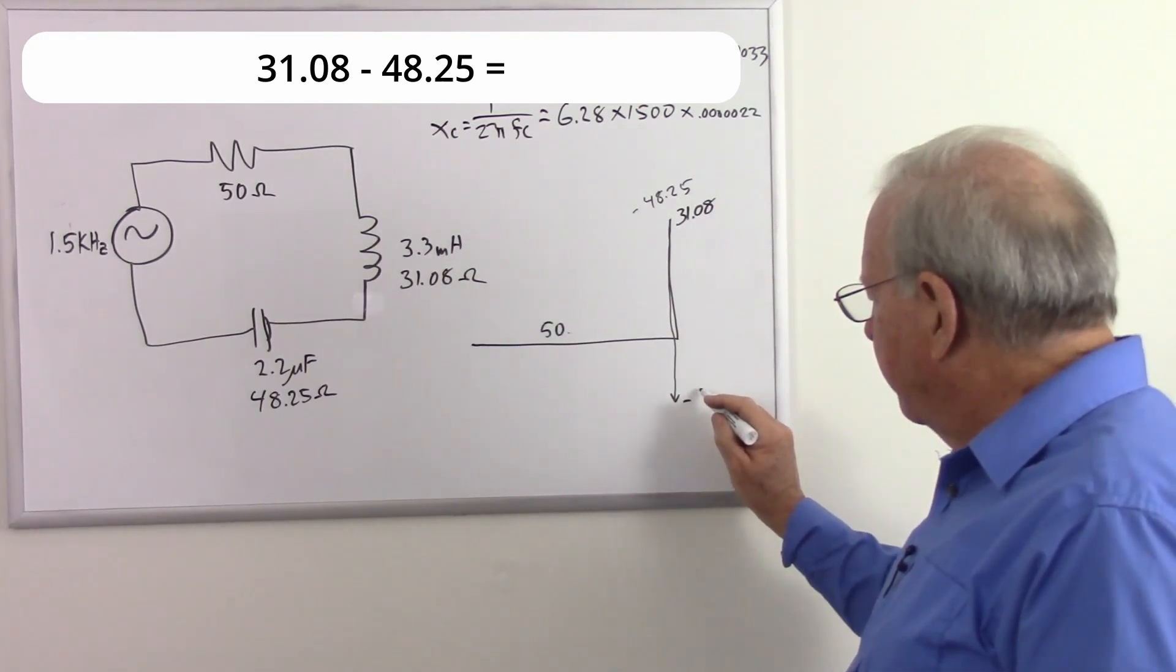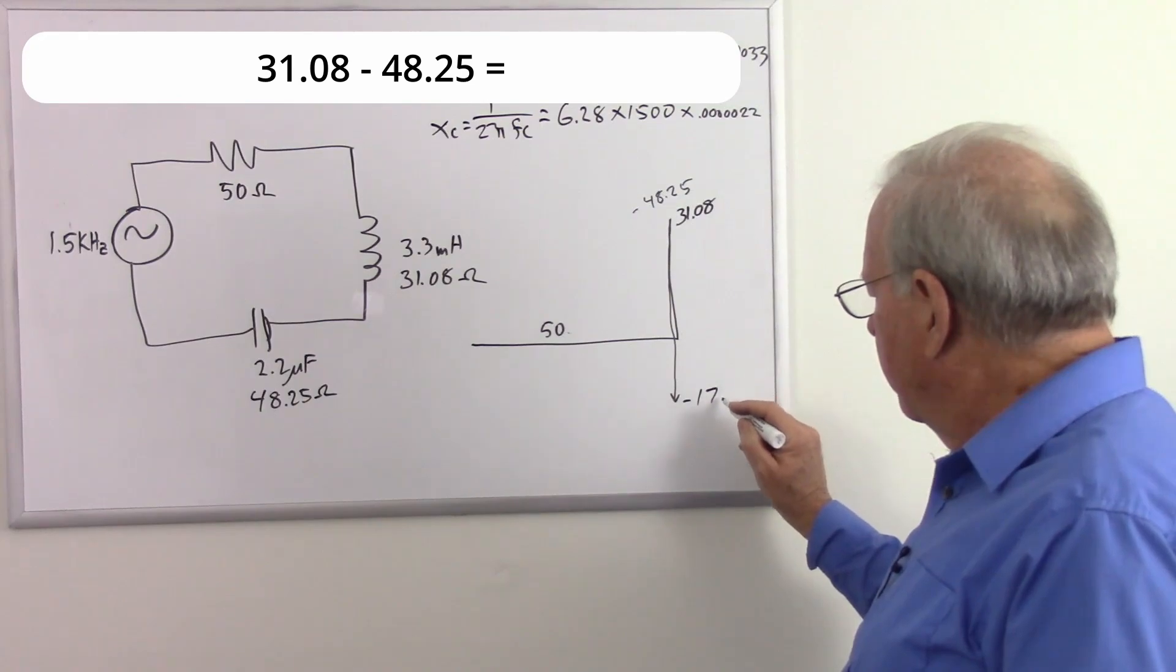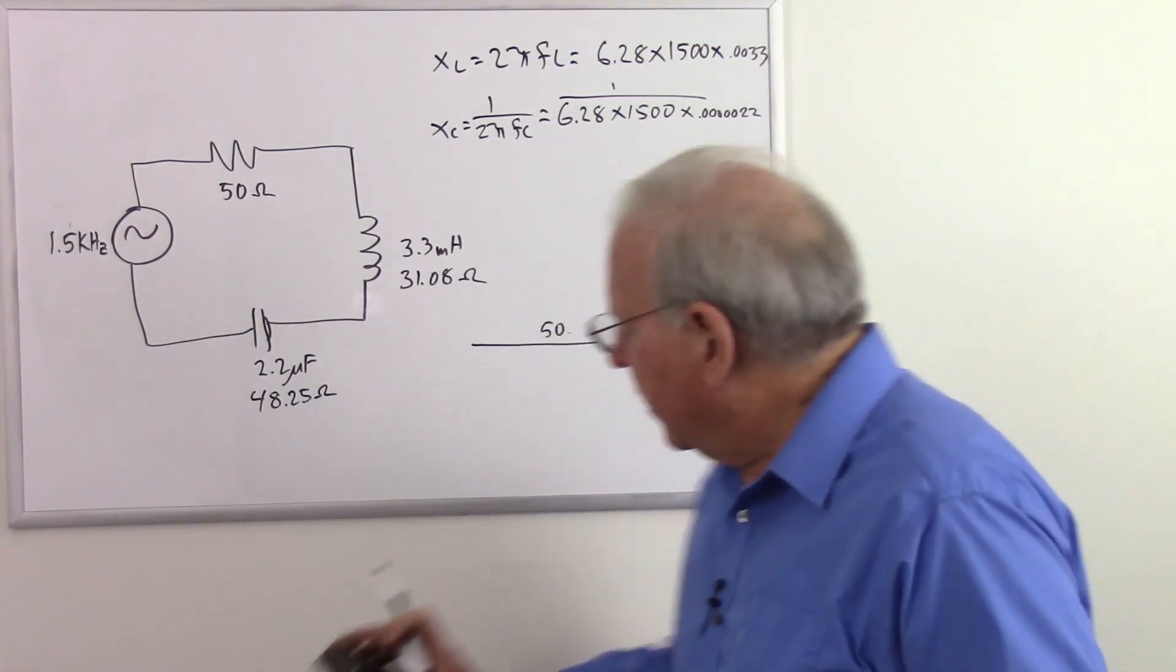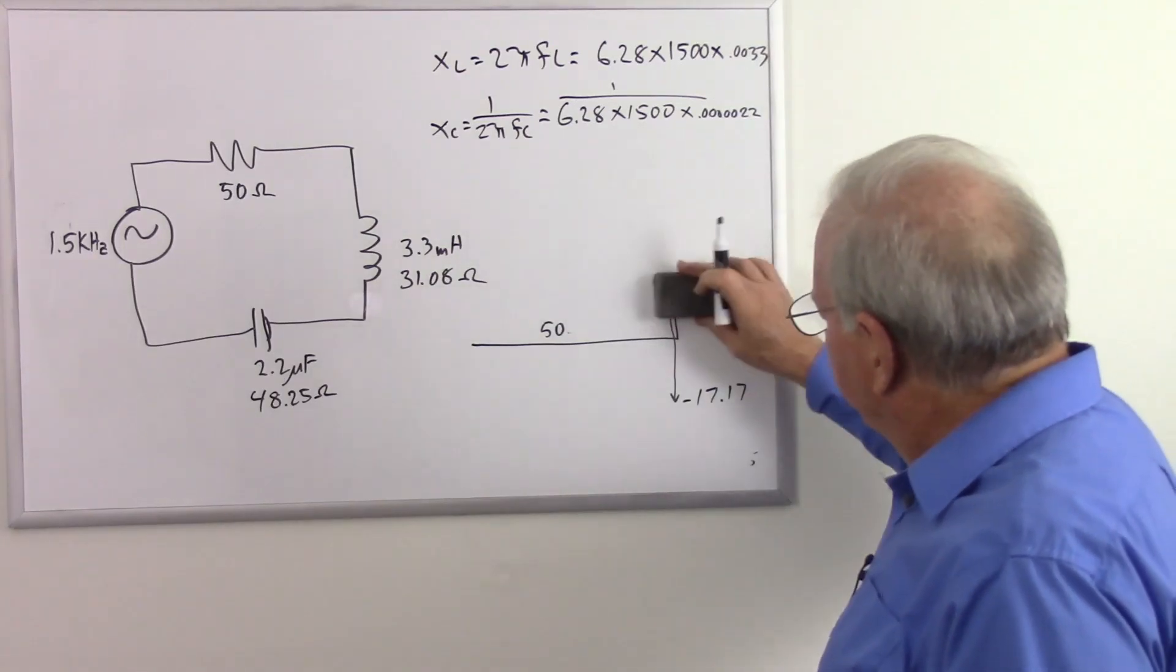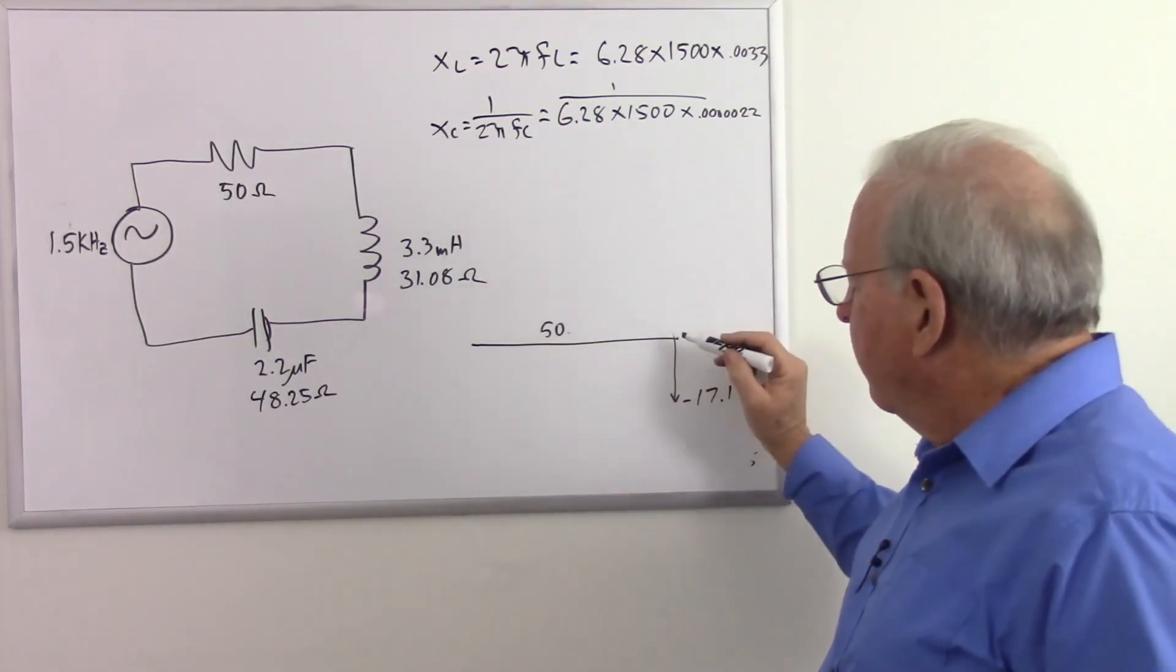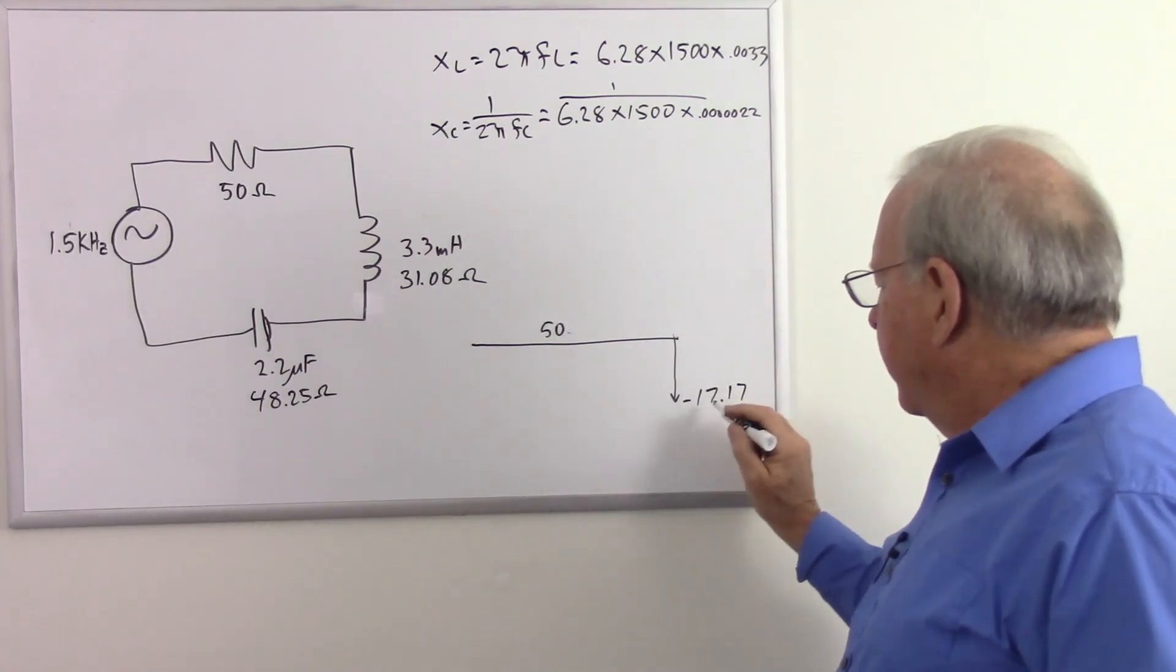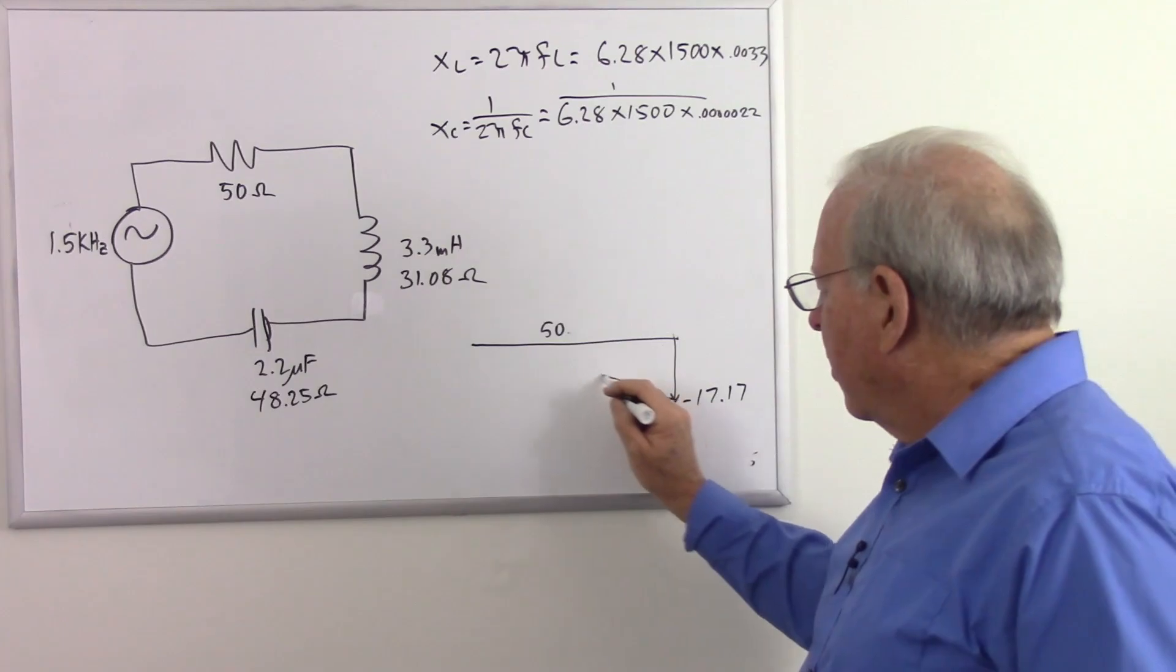So that's going to take us down to minus 48.25. So 31.08 minus 48.25 equals, gives us a total of negative 17.17. So our total reactance is negative 17.17. So there's our resistance, we add our inductive reactance, subtract our capacitive reactance, end up with a negative number. There's our triangle.